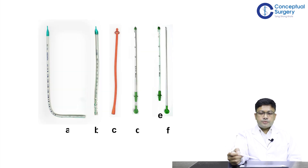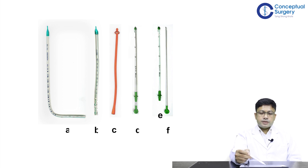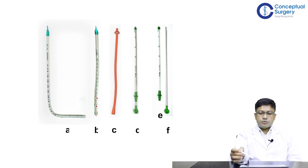Various chest tubes are used for tube thoracostomy procedures: straight flexible tubes, curved flexible tubes, and tubes with a metallic trocar inside. The chest tube has drainage holes at the tip, and at the tail end it has a tapered end that is cut and connected to an underwater drainage collecting system.